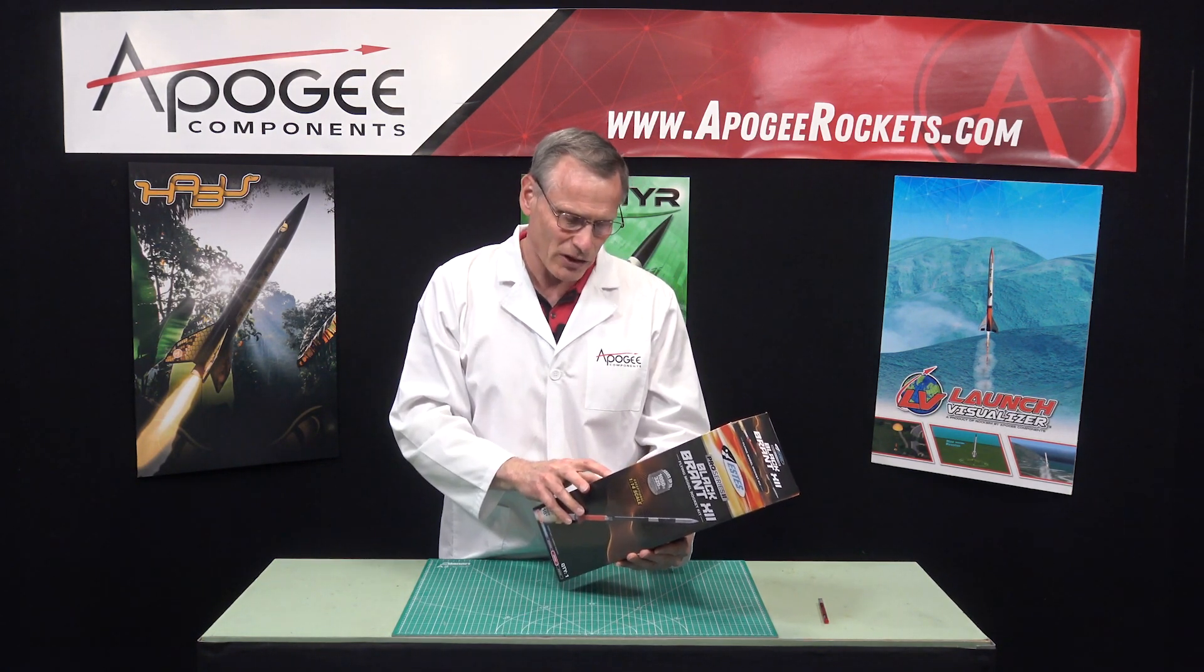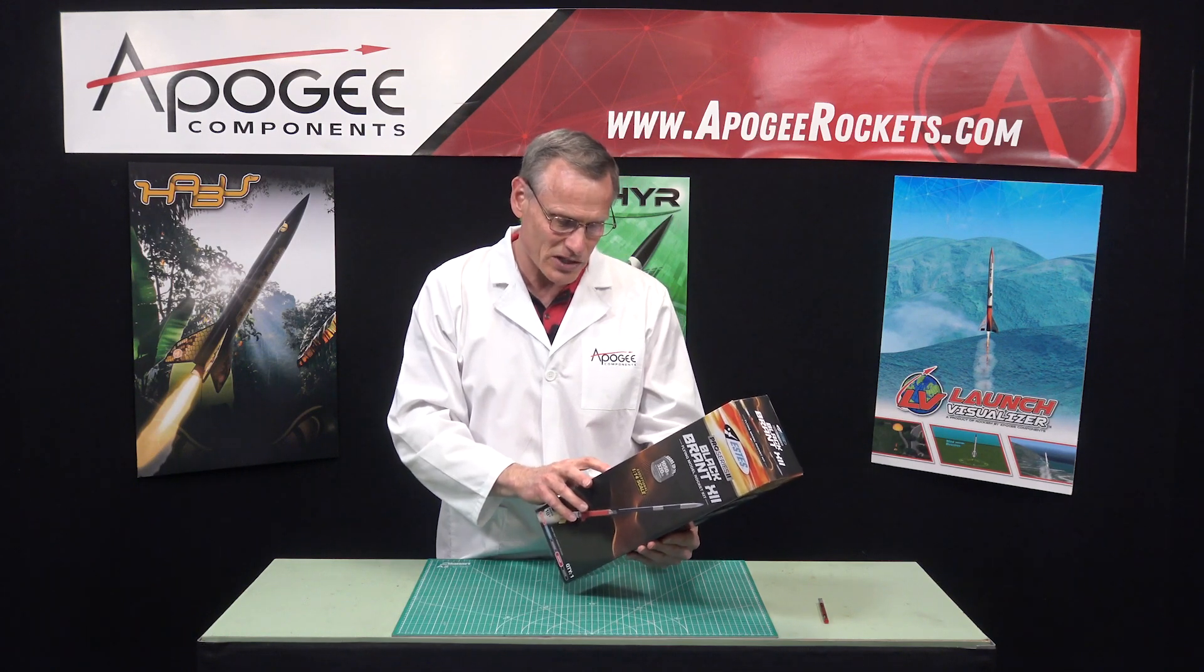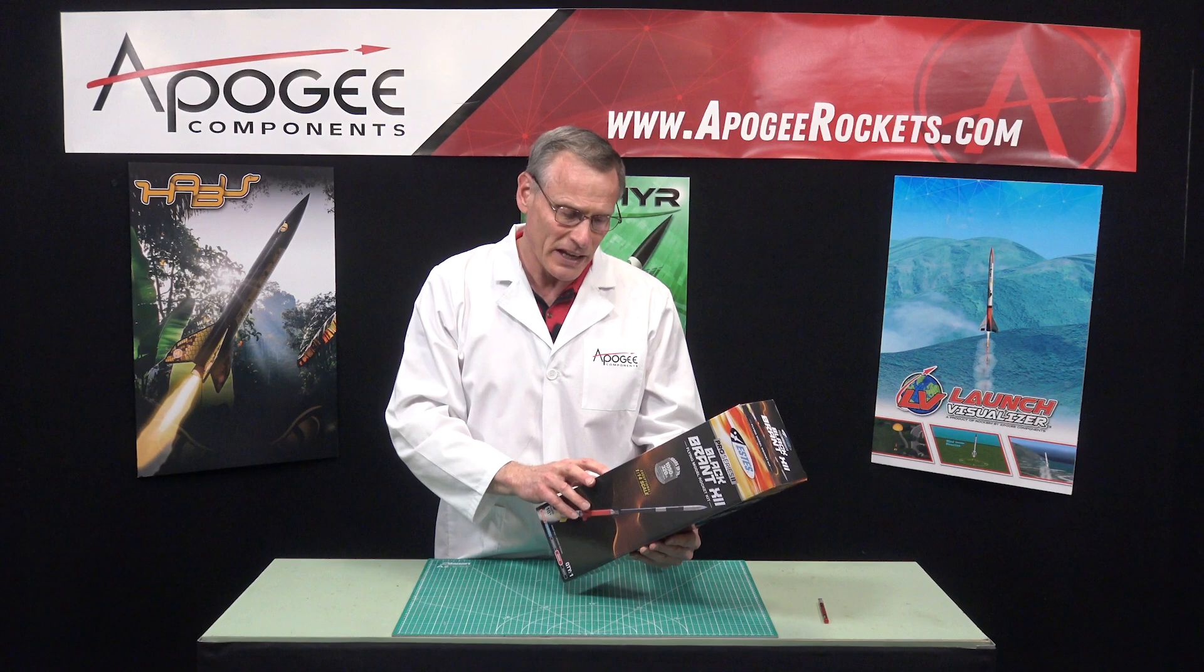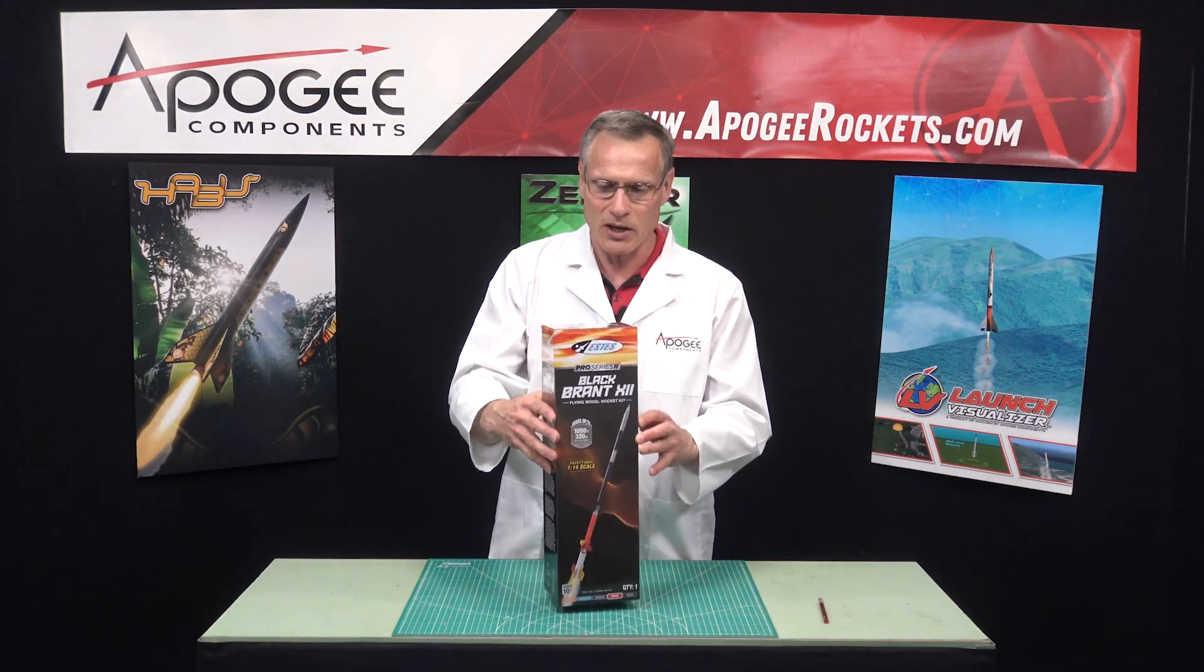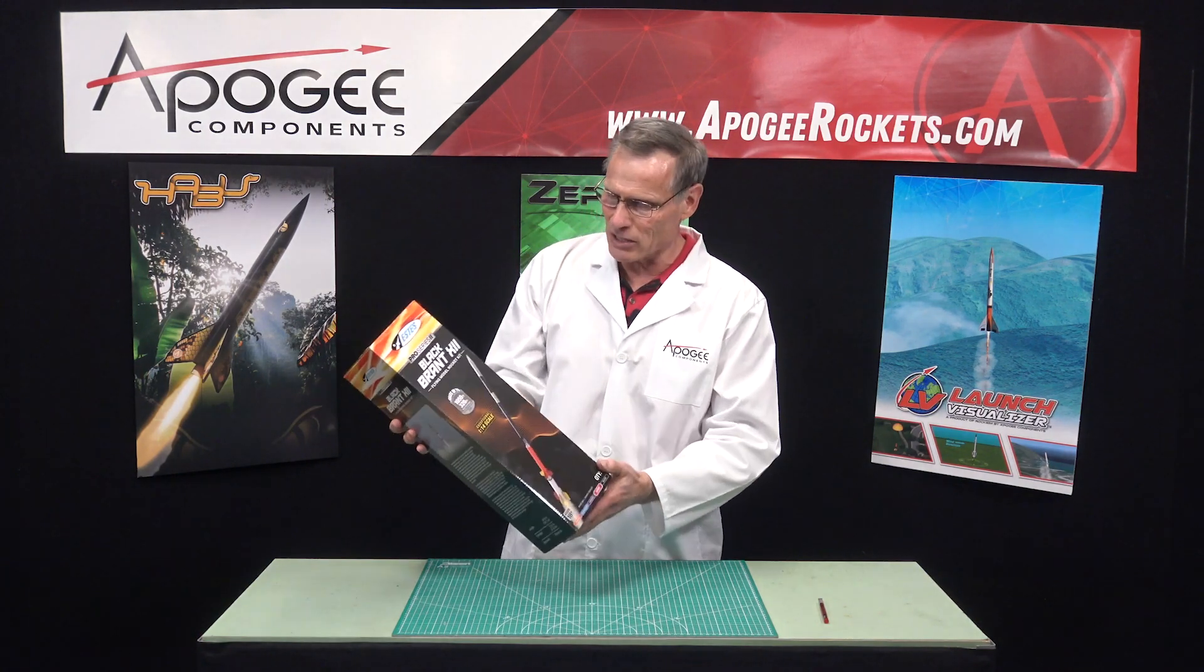It consists of the Talos first stage, a Taurus second stage, the Black Brandt third stage, and a Nika fourth stage, and I didn't know about that fourth stage.